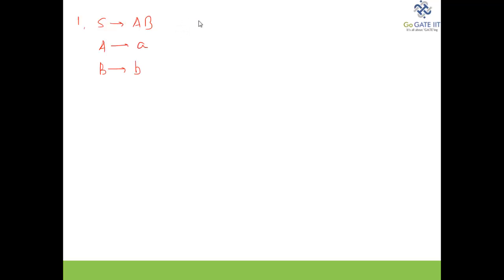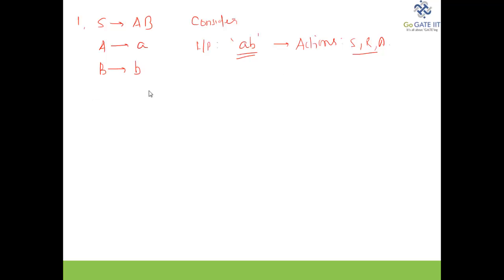Now let's look at the first example. We have a given grammar: S → AB, A → a, and B → b. The input string is 'ab'. To accept this string with this grammar, the compiler will take certain actions — specifically shift, reduce, and accept.